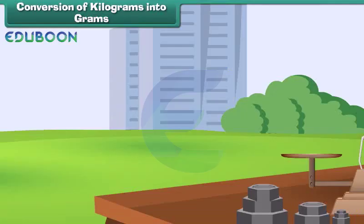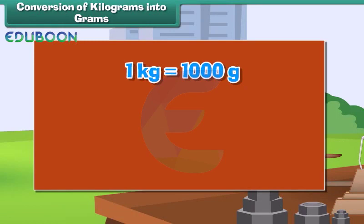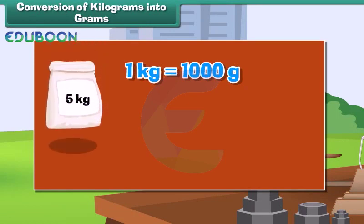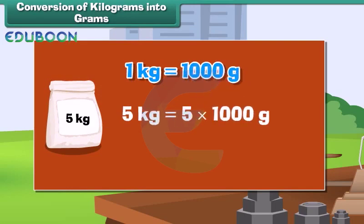Conversion of kilograms into grams. 1 kilogram is equal to 1000 grams. Therefore, the weight of a 5 kg rice bag can be calculated as: 5 kg is equal to 5 into 1000 grams, which equals 5000 grams.